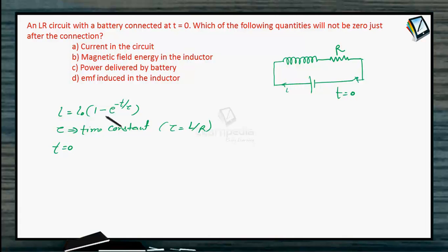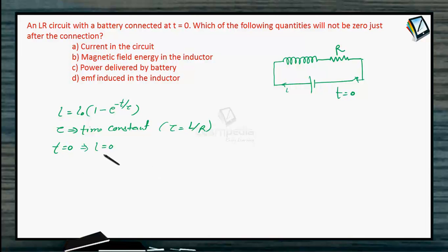At T = 0, the current in the circuit is 0, because at the starting point the inductor behaves as if it has infinite resistance. According to the equation, at T = 0, I = 0. So the first option — current in the circuit — is 0 after connection, and cannot be the correct option.